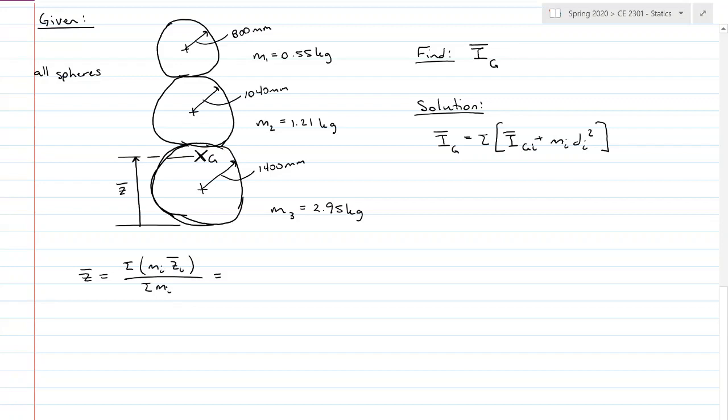Right. So that is going to be bottom to top: 2.95 times 1400 plus 1.21 times (2 times 1400 plus 1040) plus 0.55 times (2 times 1400 plus 2 times 1040 plus 800). Right, so I need to move a diameter for each sphere and then up to the very top.